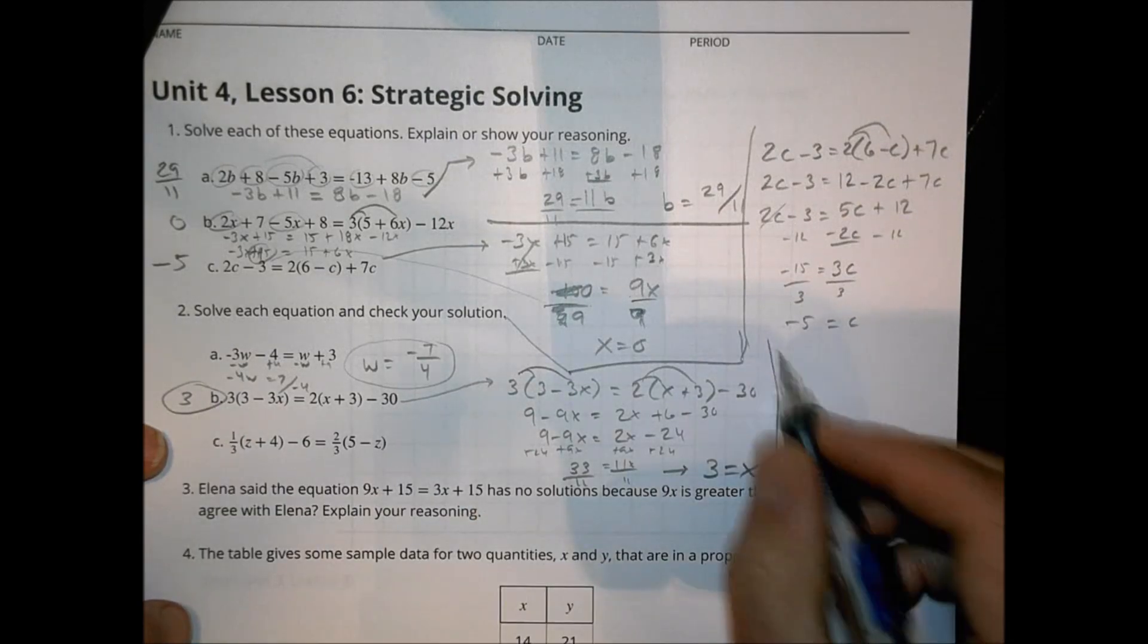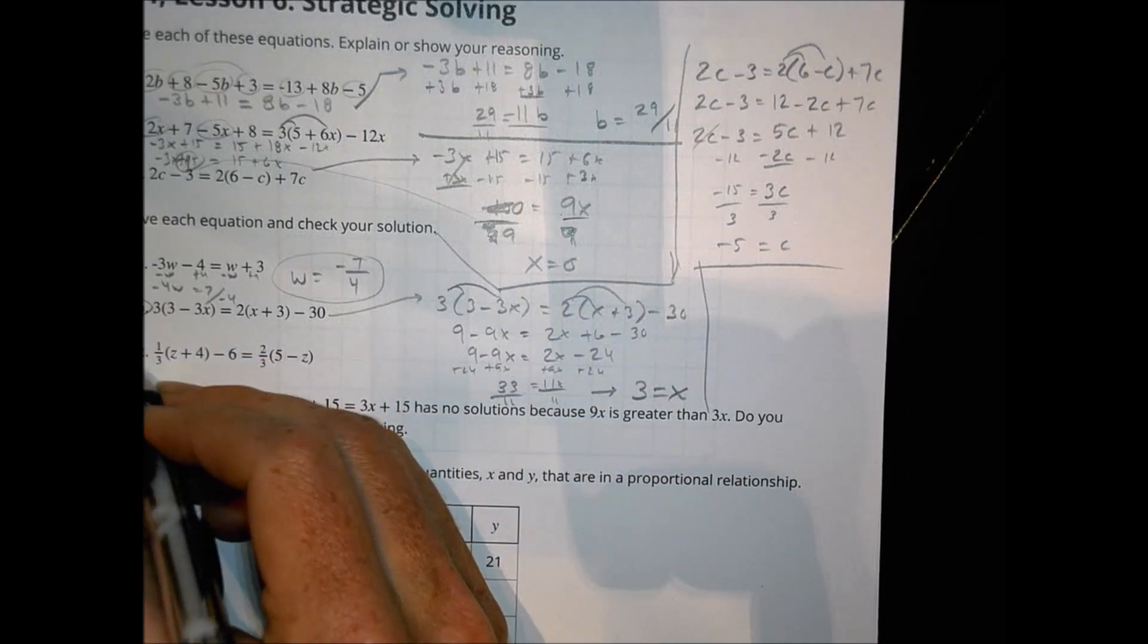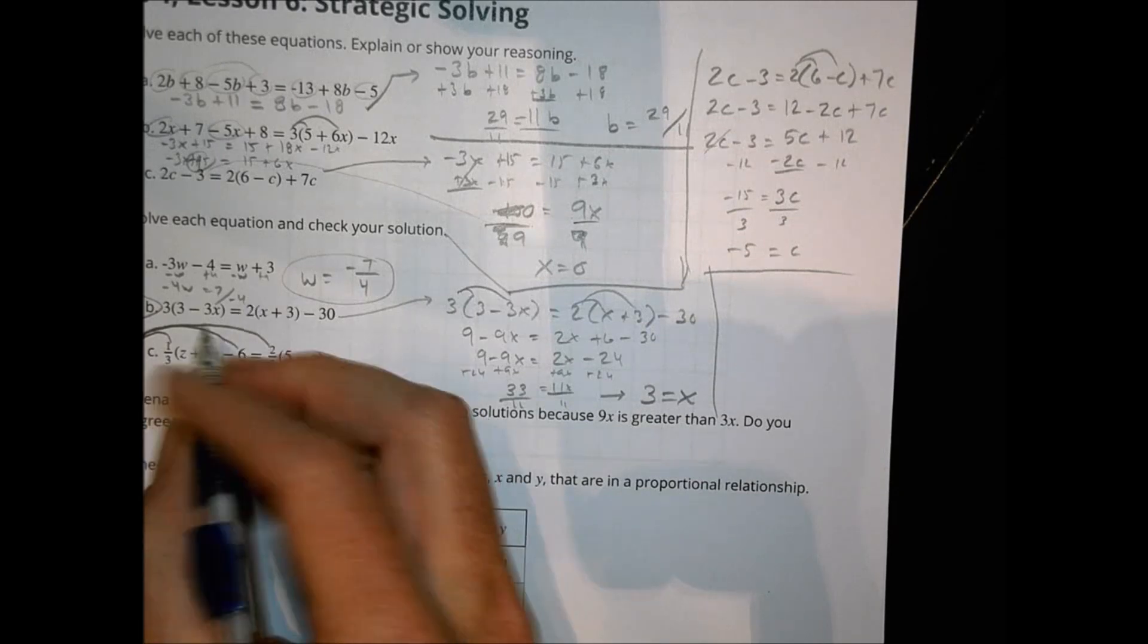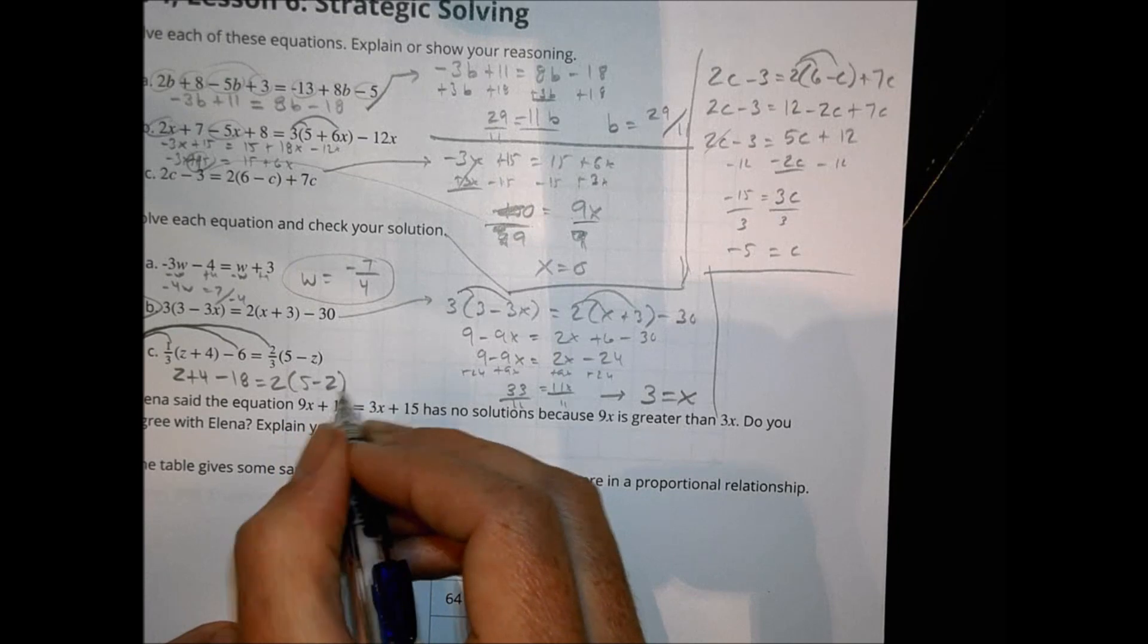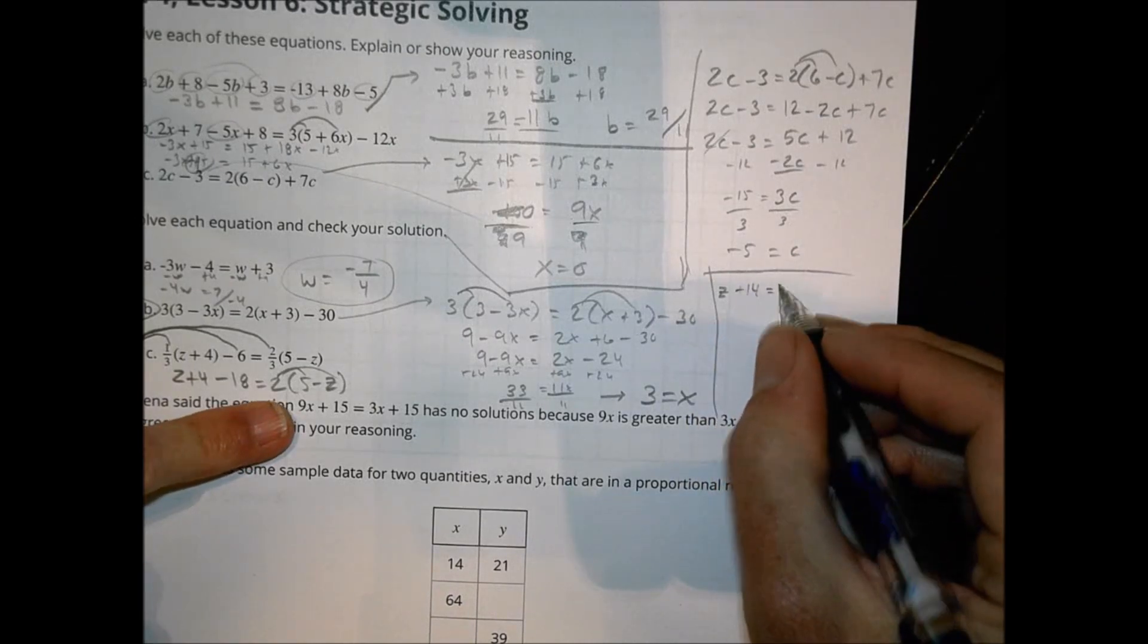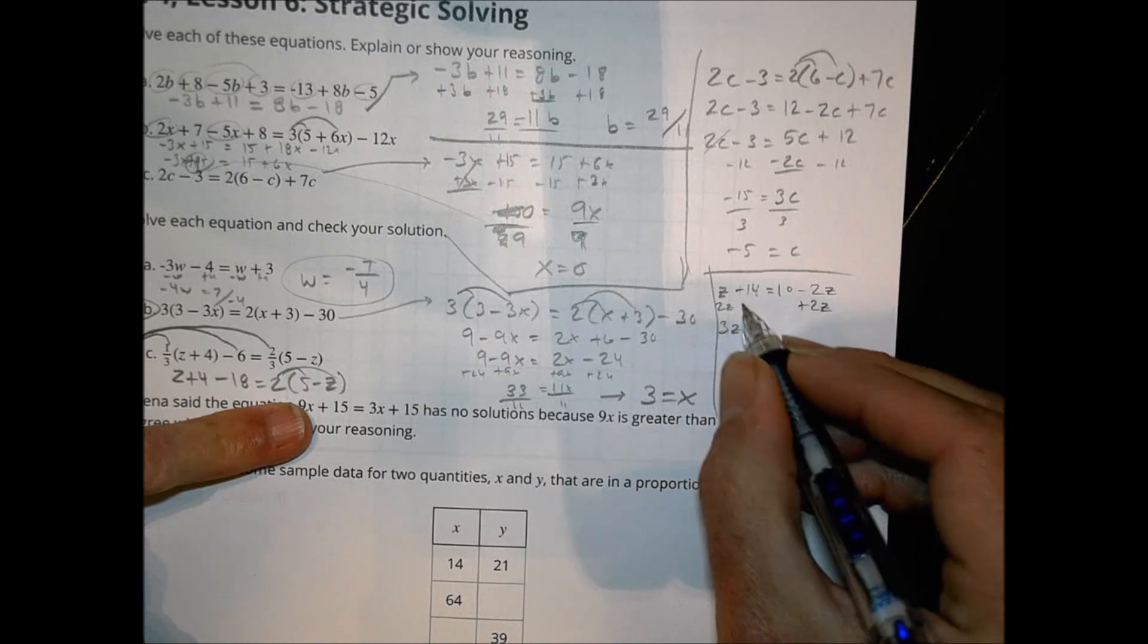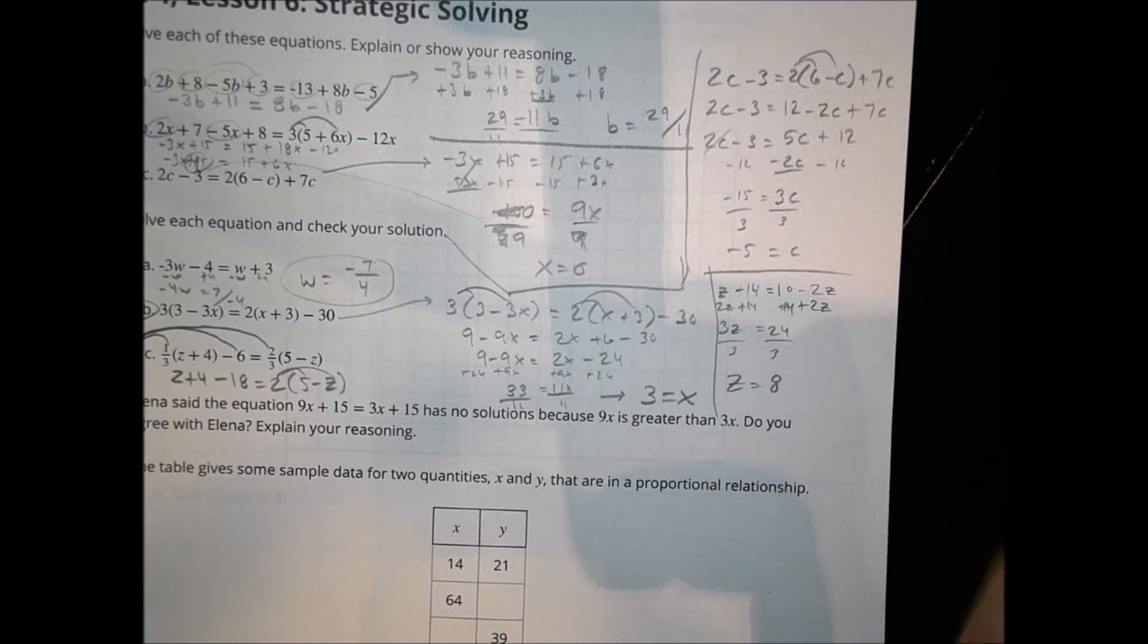And then finally for C, we have 1 third, Z plus 4, minus 6, and 2 thirds there. Let's go ahead and multiply everything by 3. To do that, I'm going to multiply that by 3. Multiply the negative 6 by 3 and the 2 thirds by 3. So in doing so, I will end up with Z plus 4 minus 18 equals 2 times 5 minus Z. Now, I distribute here. This is going to become a 10 and a minus 2Z. So we have Z plus 4 minus 18 is going to be a minus 14. So we have Z minus 14 equals 10 minus 2Z. So if I add 2Z over here, I end up with 3Z. And if I add 14 to both sides, 3Z equals 24. Divide by 3. Z is going to be equal to 8.